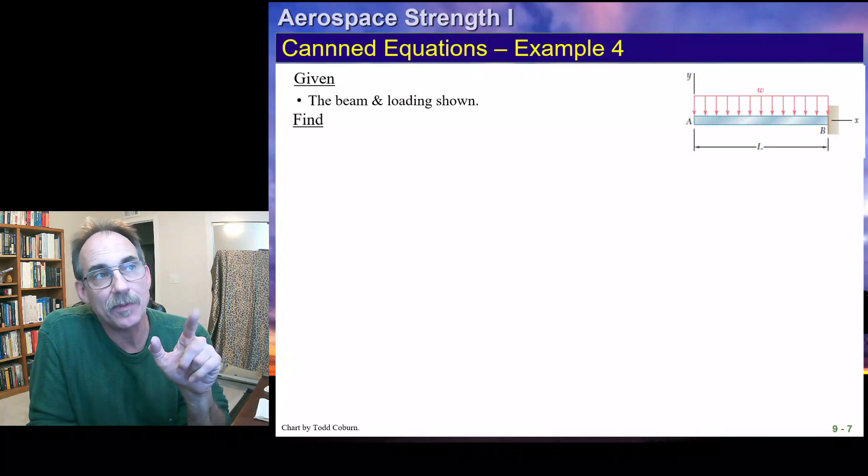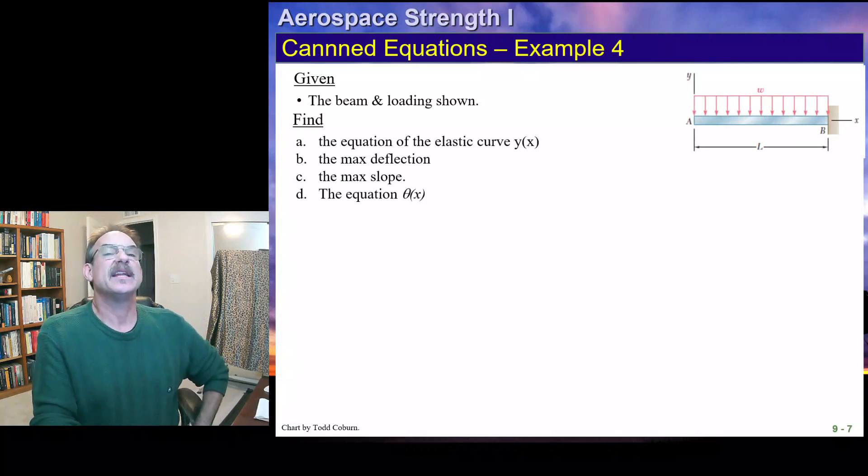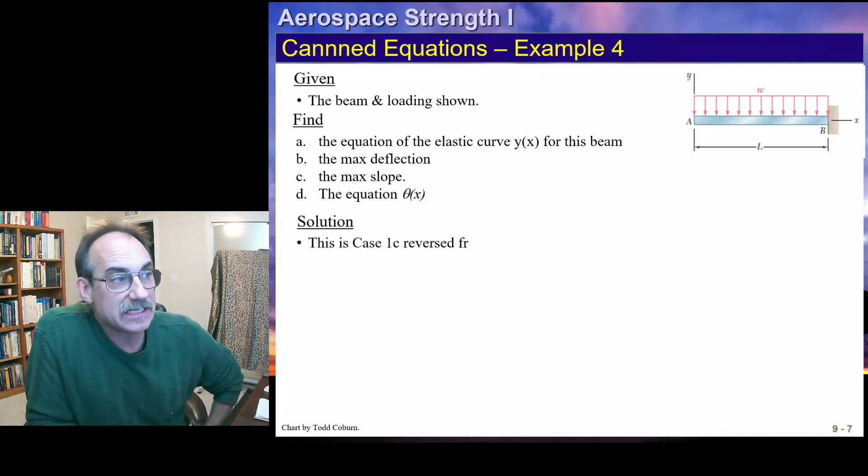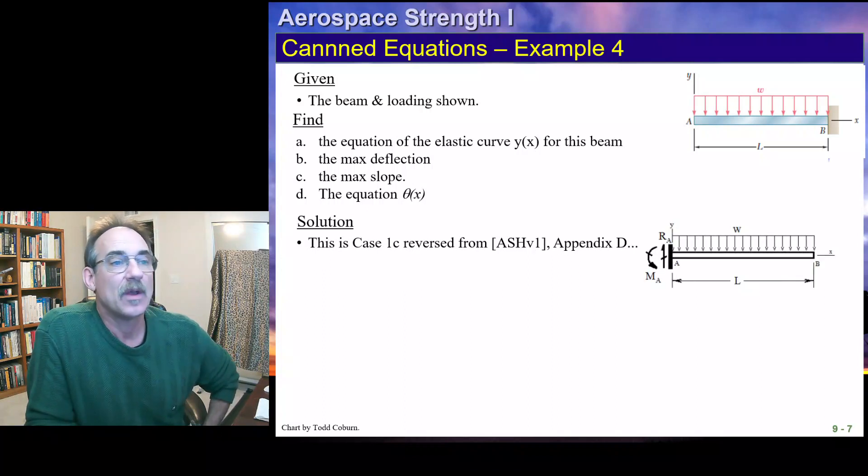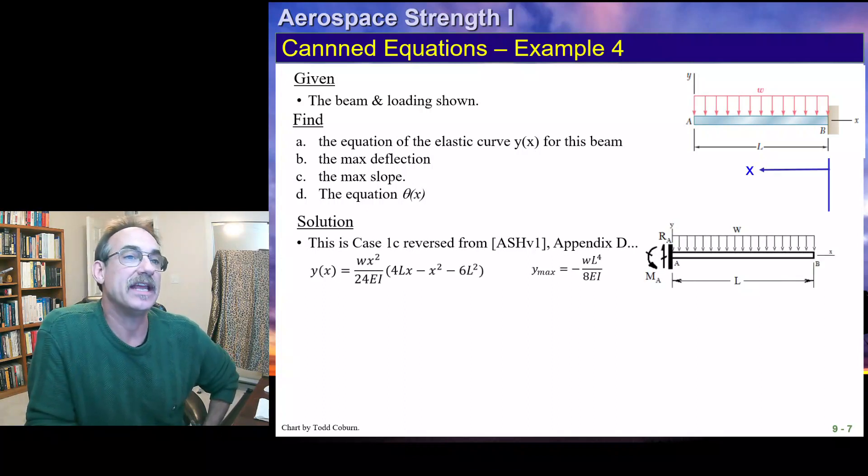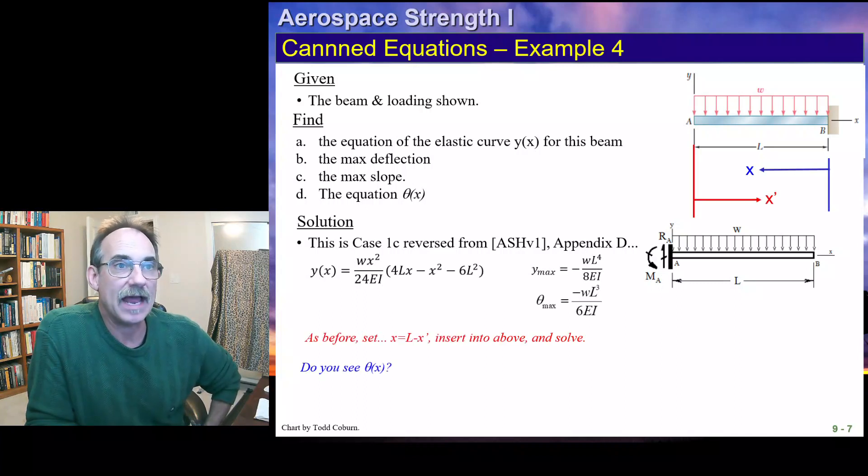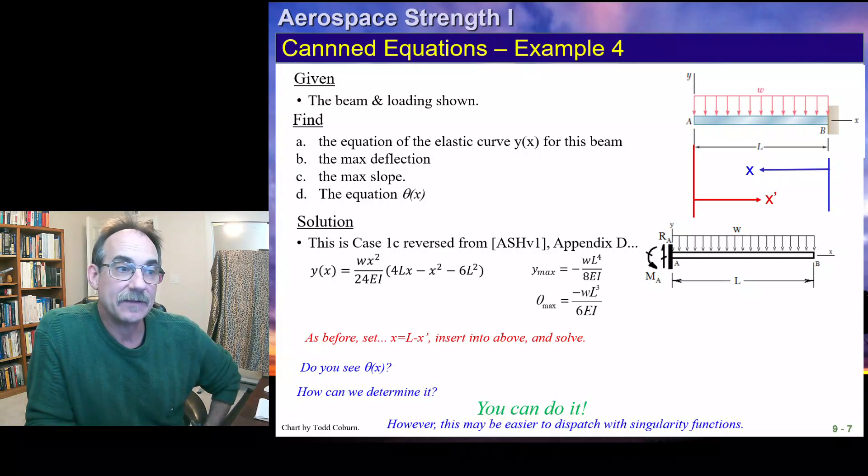Here's another example. Once again, we look at this. We say, well, this doesn't precisely belong in our handbook. It's not in our handbook. But if we reverse Case 1C, we can do that. Once again, we're going to use a substitution of variables in order to solve that. Got that? That's how we do those kind of beams.